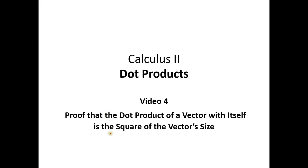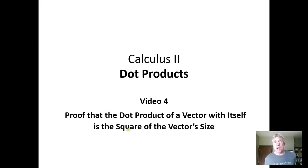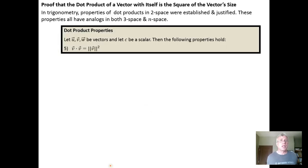In this video we're going to prove property 5 of dot products in R3. This property says that if we take the dot product of a vector with itself, we get the square of the size of the vector.